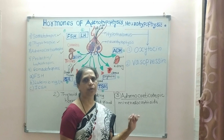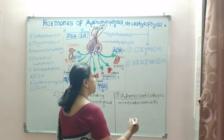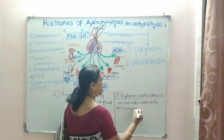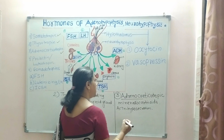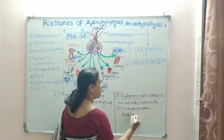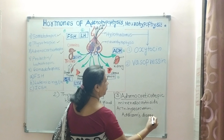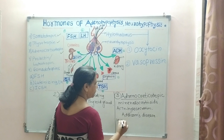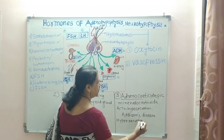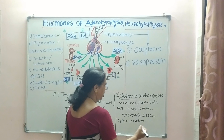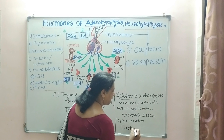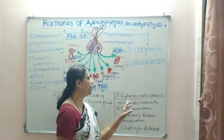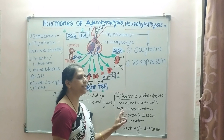Hyposecretion and hypersecretion of ACTH cause different disorders. Hyposecretion of ACTH causes Addison's disease, in which the person becomes very weak. Hypersecretion causes enlargement of the neck region or other parts of the body, called Cushing's disease.